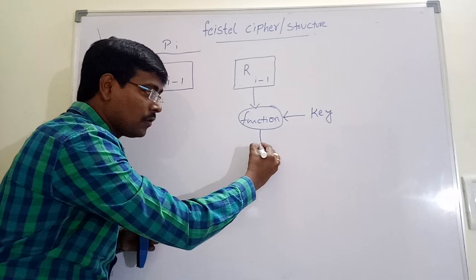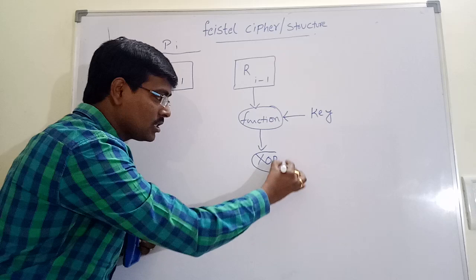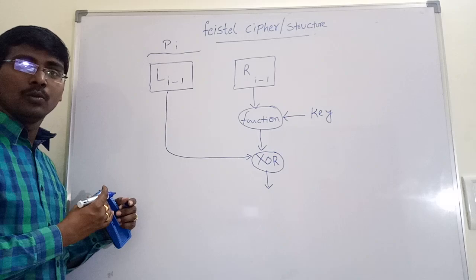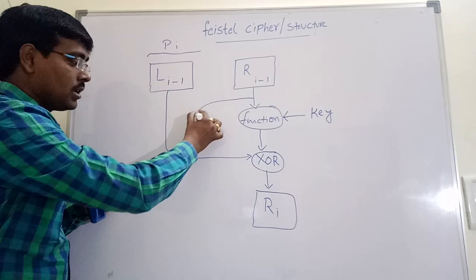After completion of calculation, it produces some result. Now this result is XOR with, that is, perform XOR operation with this result and this result. After performing XOR operation, we are getting a new result. This new result becomes Ri. That is, the right part for next iteration. And previous Ri-1 becomes Li.